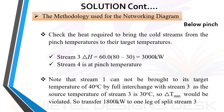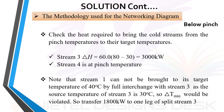Stream 4 is at pinch temperature. Note that stream 1 cannot be brought to its target temperature of 40 degrees Celsius by full interchange with stream 3, as the source temperature of stream 3 is 30 degrees Celsius, so the minimum temperature difference would be violated. Therefore, transfer 1800 kilowatts to one leg of the split stream 3.